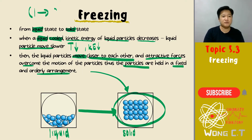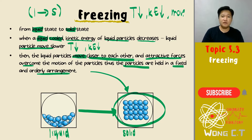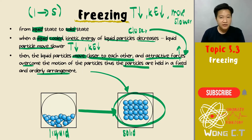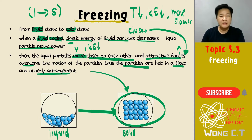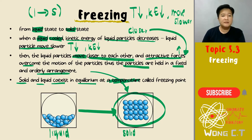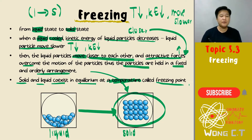To summarize freezing: temperature decreases, kinetic energy decreases, particles move slower, move closer together, attractive forces increase and become significant, and all liquid particles are held in an orderly arrangement as a solid. When the solid and liquid co-exist in equilibrium, that particular temperature is called the freezing point.